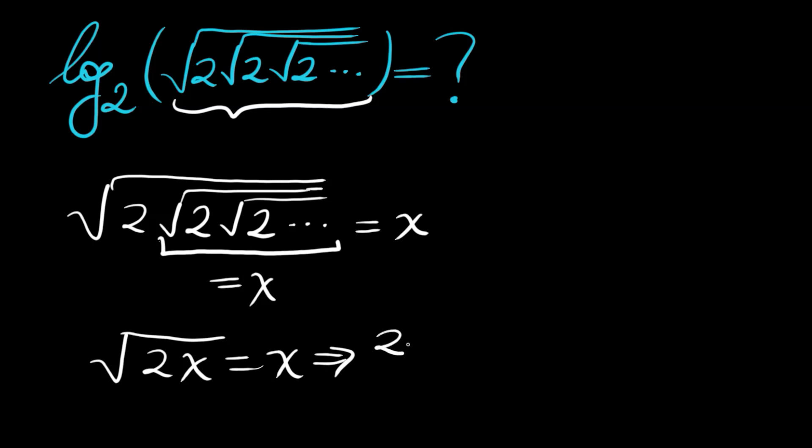we will have 2x equals x squared. And since x cannot be zero—the square root of these positive numbers cannot be zero—we cancel one x, then we have 2 equals x.